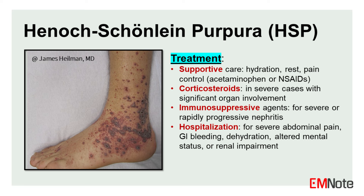Corticosteroids. Although controversial, corticosteroids may be considered in severe cases with significant gastrointestinal, renal, or other organ involvement to reduce inflammation and prevent complications. Immunosuppressive agents such as cyclophosphamide or rituximab may be used in conjunction with corticosteroids in cases of severe or rapidly progressive nephritis.